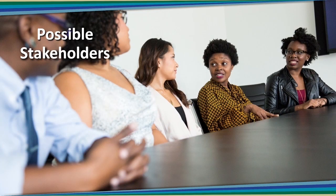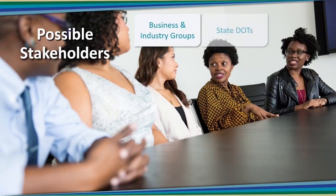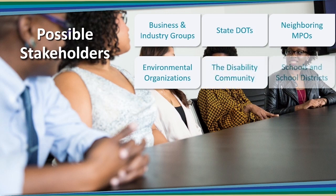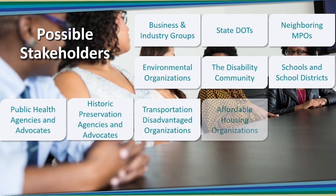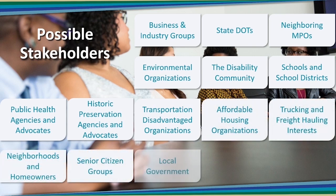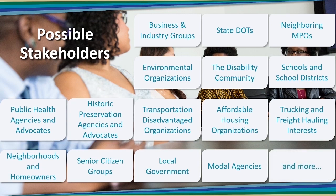Possible stakeholders include business and industry groups, state DOTs, neighboring MPOs where people commute back and forth, affordable housing organizations, and trucking and freight haulers — a very extensive list. It's different in every metropolitan area's context. The business community probably exists everywhere, but not every place has a federal park — but some do, and they're a stakeholder. You need to pay attention to that.